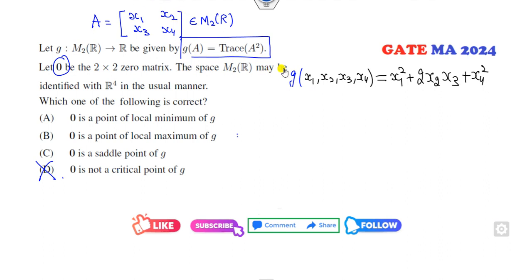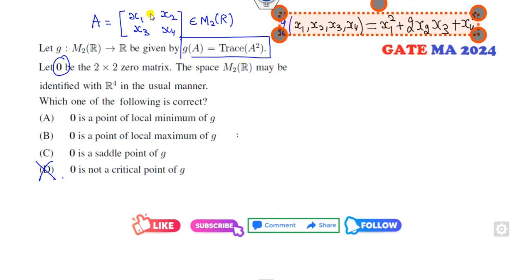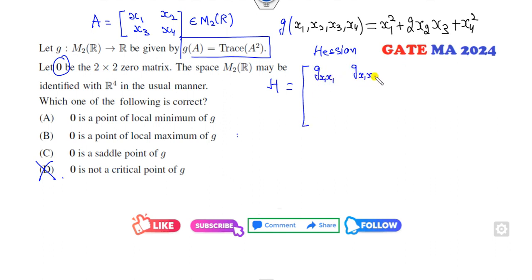Now once you know 0 is my critical point, how can you find the maxima and the minima or the saddle point condition? So again very simple, you have to draw the Hessian matrix H. So this will be g_x1x1, g_x1x2, g_x1x3, g_x1x4, similarly x2x1, x2x2, and so on.